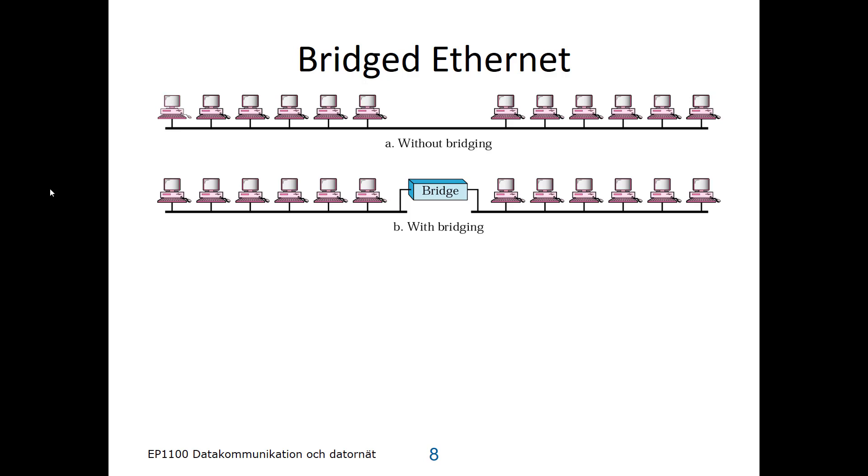Where if you have, again, CSMA/CD, a node that communicates on the left side will not cause a collision on the right side. So that means that the bridge has to be able to filter traffic. If the traffic sent on the left side is destined for a node on the left side, then it should not be passed over to the right side, and vice versa.